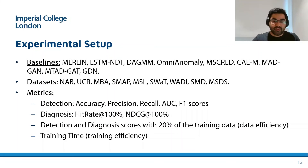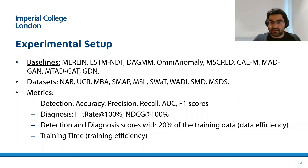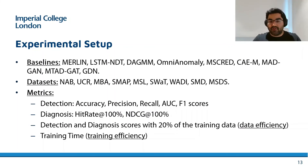In terms of datasets, we use two univariate datasets — the NUMENTA anomaly benchmark and UCR — and multivariate time series datasets including MBA, SMAP, MSL, SWAT, WADI, SMD, and MSDS. SMD and MSDS are taken from real-life edge and cloud computing environments. For further details of the baselines and datasets, I refer you to our paper.